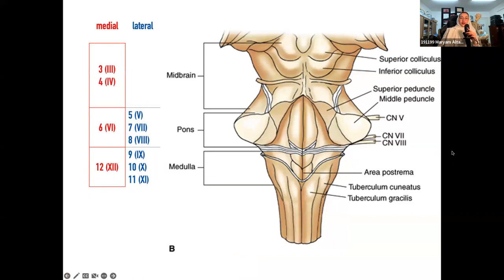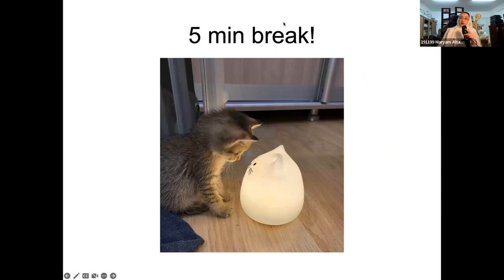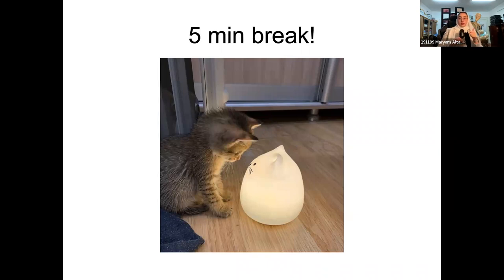There's something at the back called the area postrema — a very important part of the brain not covered by the blood-brain barrier. It senses chemicals in the blood and triggers vomiting. For example, patients on chemotherapy have toxic substances in the blood detected by the area postrema, which then signals the brain to initiate vomiting. We're going to take a five-minute break — I encourage you to write everything down. Make sure the rule of fours and how to differentiate cross sections are clear, as it makes the rest much easier.